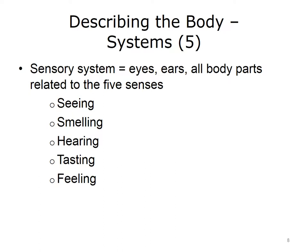Finally, the last system is the sensory system. This system includes the eyes, ears, and all body parts related to the five senses of seeing, smelling, hearing, tasting, and feeling. Some parts of this system may be included within other body systems, but the primary components are the eyes and ears.